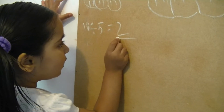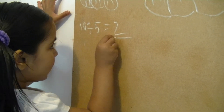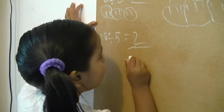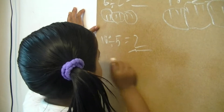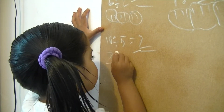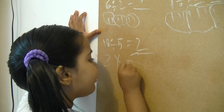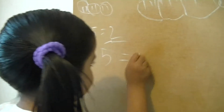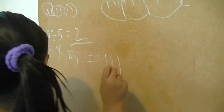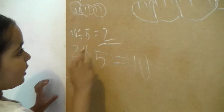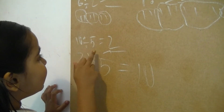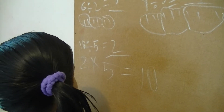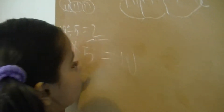How? I'll explain. Because two times five makes ten. So that's why ten divide five makes two.